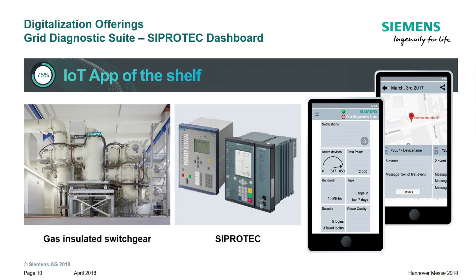One of the standard apps based on this IoT connectivity is the off-the-shelf diagnostic suite — especially the SIPROTEC dashboard. We have, for example, gas-insulated switchgears in the in-feed for large industrial areas or in power distribution. Our SIPROTEC devices, with the IEC 62541 OPC UA PubSub protocol, are connected to the cloud. The idea of this standard app is that every maintenance team is able to have this information directly and quickly on their mobile device.